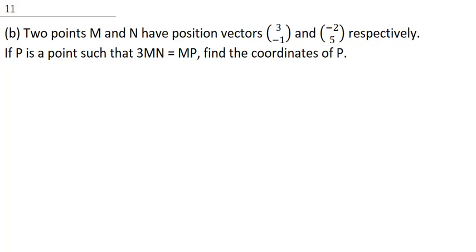Now, this is a vector question. One of the things you need to understand while solving a vector question is, first of all, you need to get a reference point. Now, this is our vector M, so I'm going to call it O M, where O is our reference point. O M is 3 minus 1, and our O N is going to be what, minus 2 and 5.